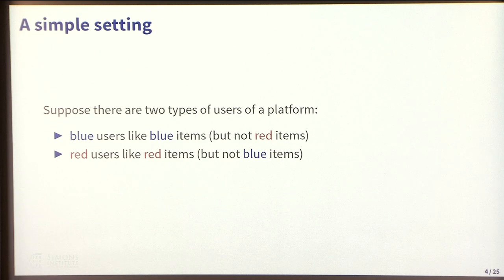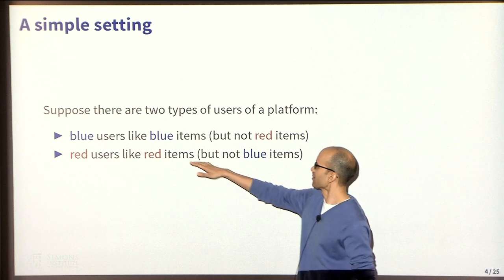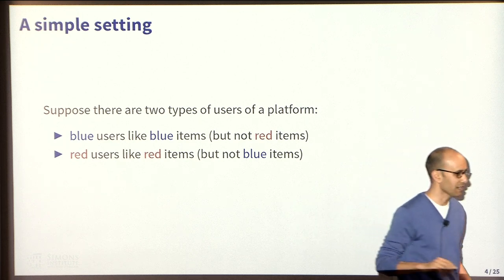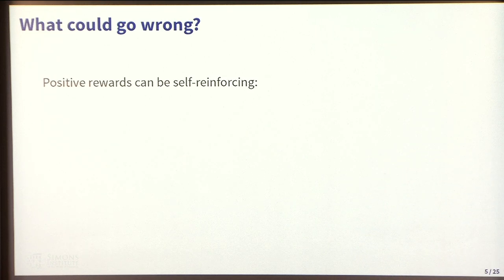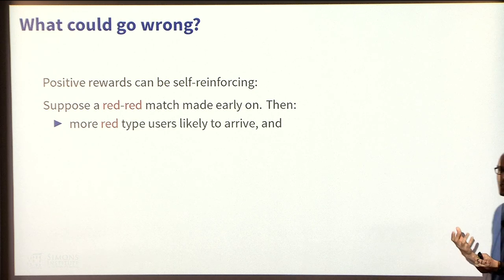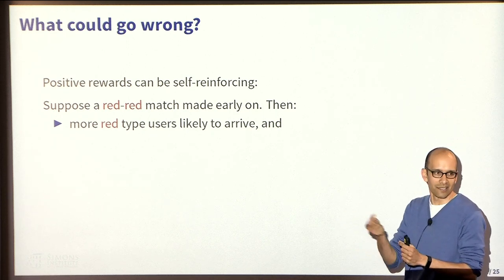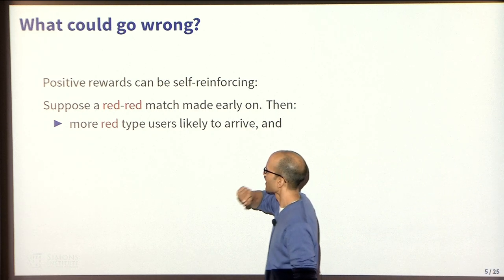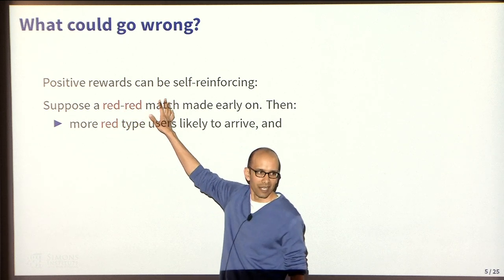The first two slides here, I'm just going to set up for you what one of the main points of the talk is with a very simple example that illustrates how positive externalities play a role in the analysis that we do. Suppose there's two types of users: blue users like blue items but not red items, and red users like red items but not blue items. In a nutshell, if you ask yourself what could go wrong in using a typical learning algorithm that's ignoring this self-reinforcement effect, here are the basic issues. Suppose a successful red-red match is made early on.